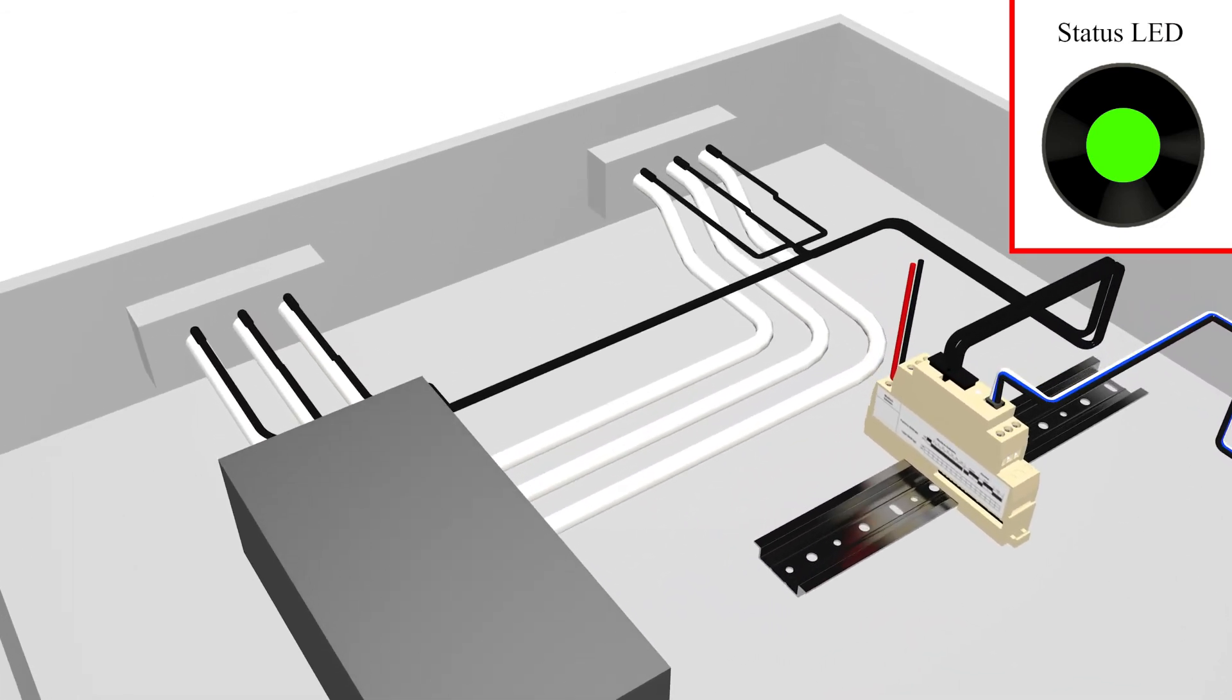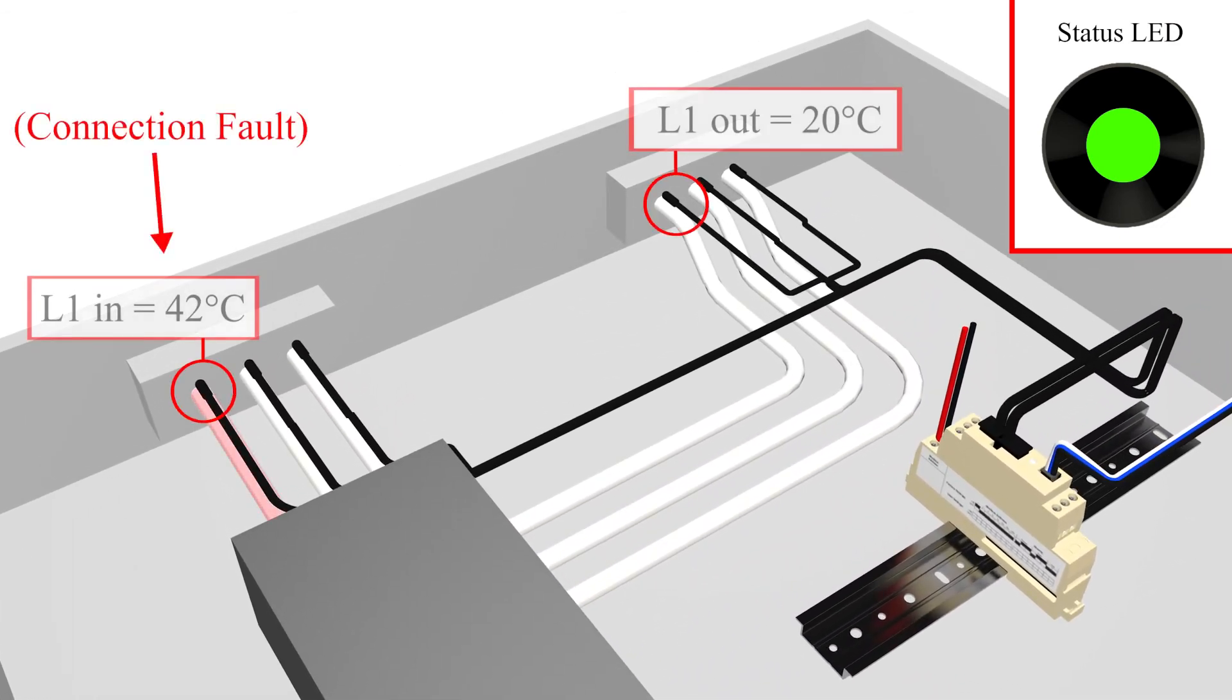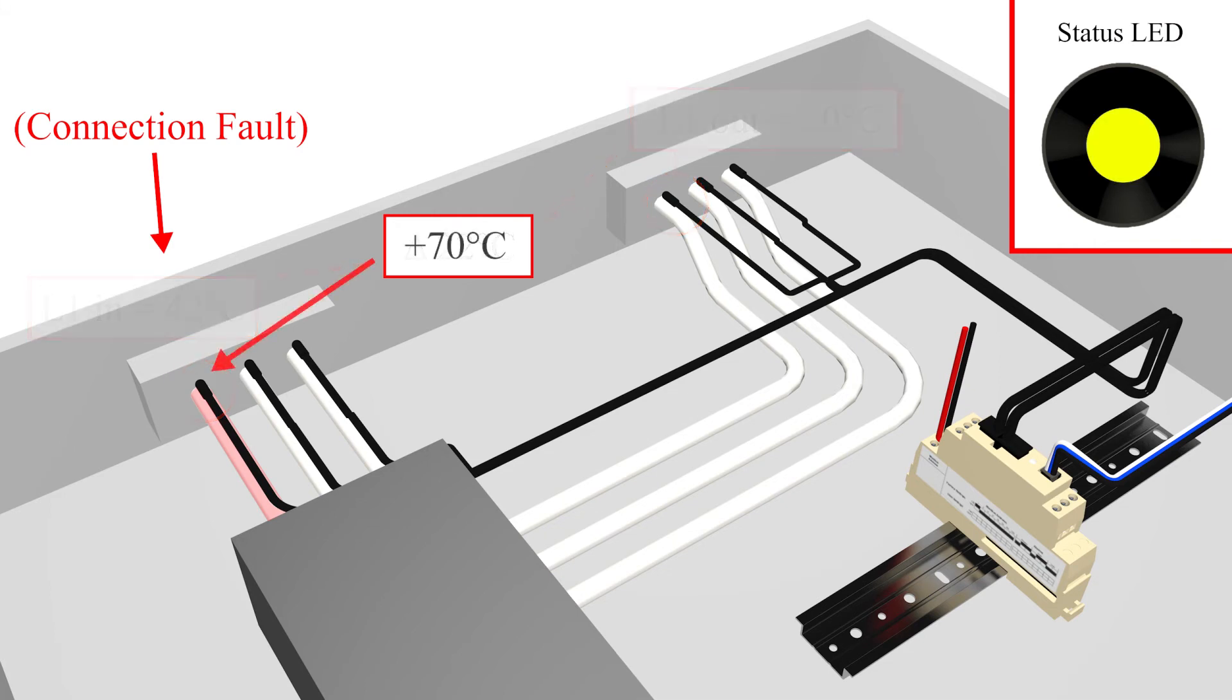For a failing termination, there are two alarms generated. First is the warning level alarm, for which the status LED will flash yellow. Should the temperature continue to increase, then a high alarm is triggered and the status LED will flash red.